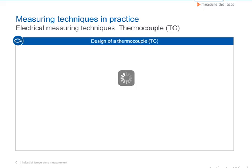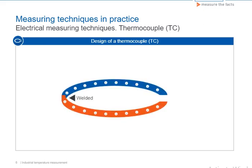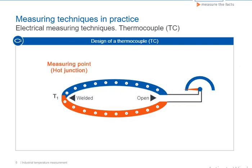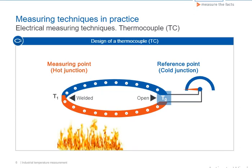The thermocouple, or TC, is the most widely used electrical temperature measuring technique. Two conductors made of dissimilar metals are welded together at one end, while the other end remains open and is connected to a voltmeter. The welded end is also known as the measuring point or hot junction. The open end is called the reference junction or cold junction. If the two ends are in areas with different temperatures, the electrons in the metals move differently, and a thermovoltage proportional to the temperature difference can be read off at the voltmeter.